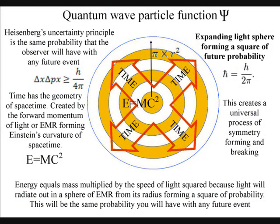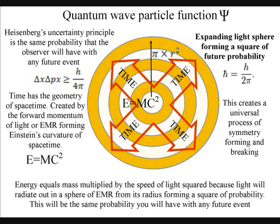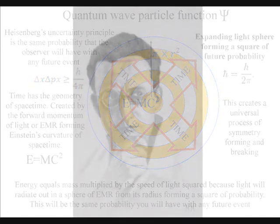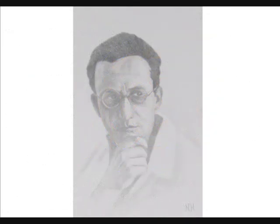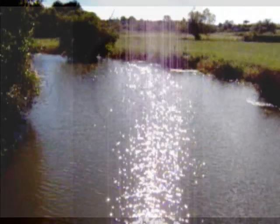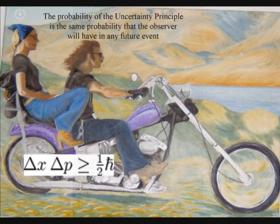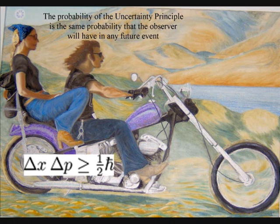This theory is based on two simple postulates. The first is that the quantum wave particle function, explained by Schrödinger's wave equation, represents the forward passage of time or arrow of time itself, photon by photon, or moment by moment. The second postulate is that Heisenberg's uncertainty principle, that is formed by the wave function, is the same uncertainty that we have with any future event.